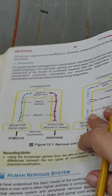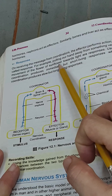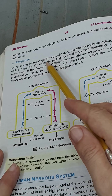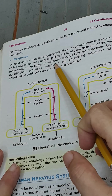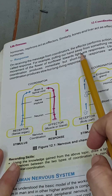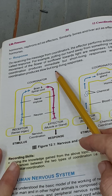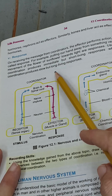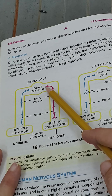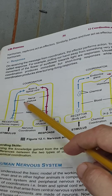The last component is response. Response is the action taken after receiving messages from the coordinators, when effectors show a reaction. For example, pulling the hands away when we touch a hot object is a response; the movement of a sunflower toward light is a response; feeling happiness when we see something is a response; and when muscles move according to the coordinator, that is also a response. A comparison is also given between nervous and chemical coordination.